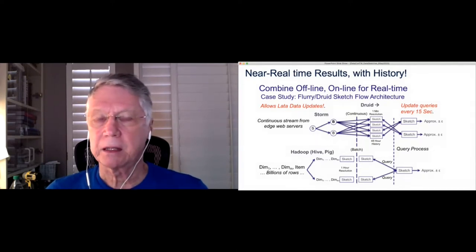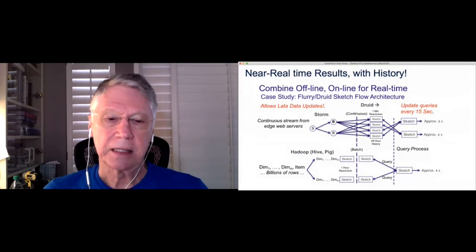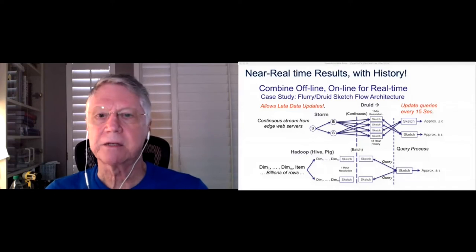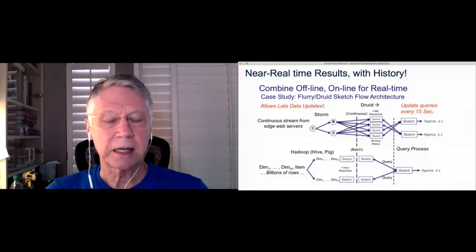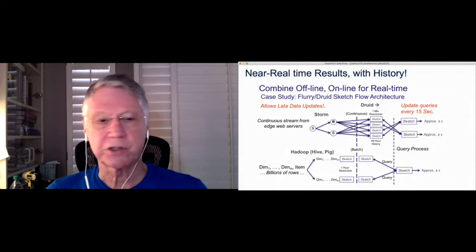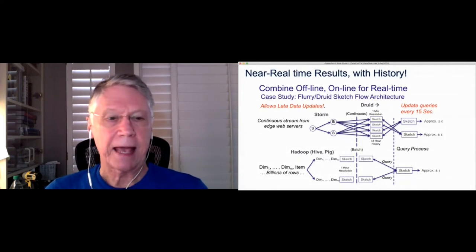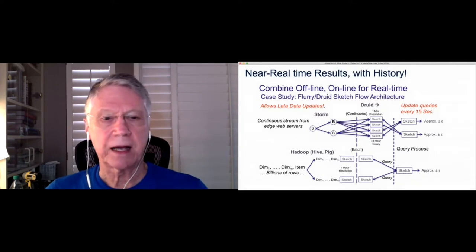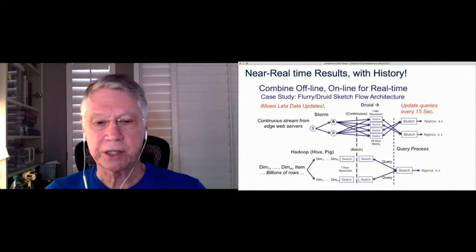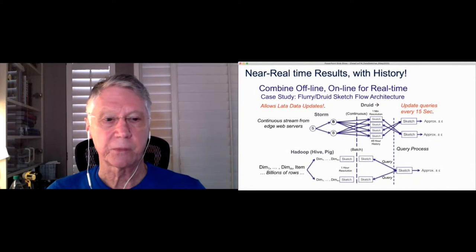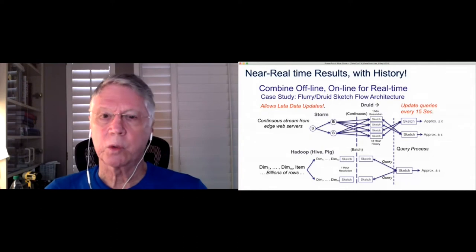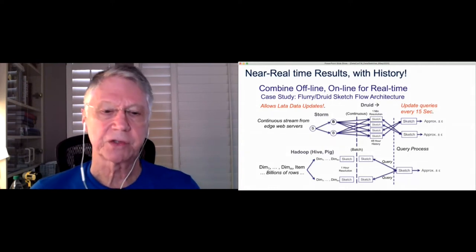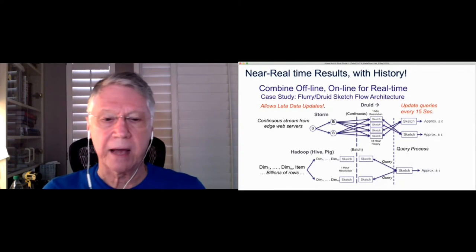And then it was able to update queries about every 15 seconds. So the freshness of the data was in 15 seconds of real-time. And then for longer-term storage and analysis, we had Hadoop with Hive and Pig in the back end that allowed the query process to merge in history as old as hours, days, or weeks, or months. So literally, the user interface was able to see data that was as fresh as a few seconds all the way to hours and months.